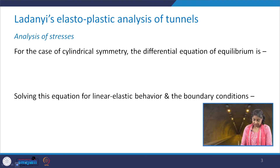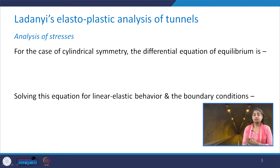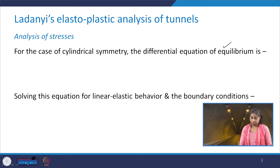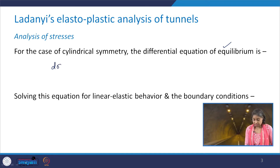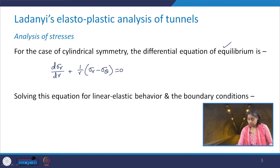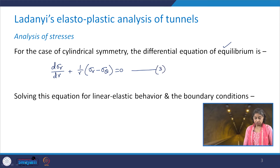We have considered the problem to have symmetry. For the case of cylindrical symmetry, the differential equation of equilibrium is written as: d(σ_r)/dr + (1/r)(σ_r − σ_θ) = 0. In continuation with the previous class, I am marking this as equation number 3.